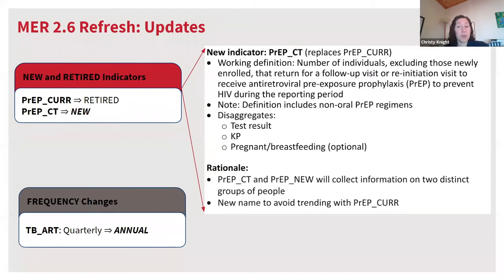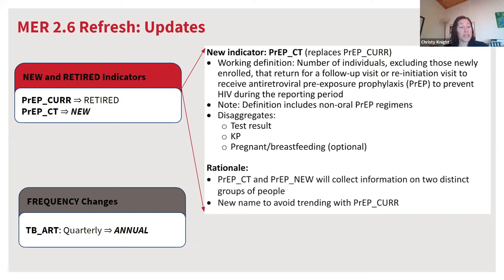Going into the details of MER 2.6 updates: two of the bigger shifts are the retirement of the PREP-CUR indicator and the introduction of a new PREP-CT indicator. PREP-CT essentially replaces PREP-CUR but is focused on PREP continuation — reflecting the number of individuals, not including those newly enrolled, who return for a follow-up or reinitiation visit for PREP, including both oral and non-oral PREP regimens. Disaggregates include test results, key population, and pregnant/breastfeeding. PREP-CT is not a cumulative indicator and reports on a quarterly basis separately from PREP-NEW. A second MER 2.6 update is decreasing the reporting frequency of TB-RT from quarterly to annual.